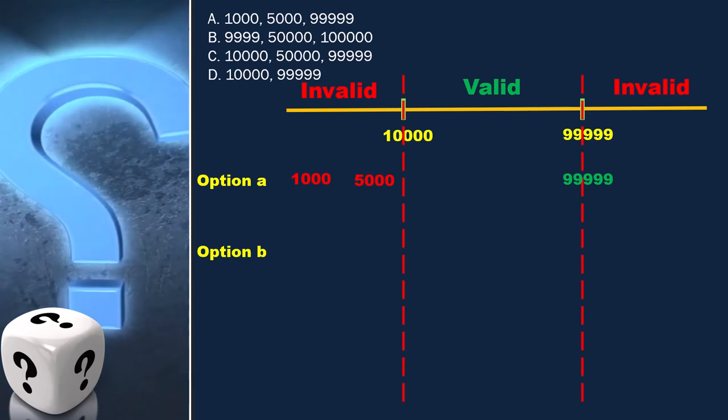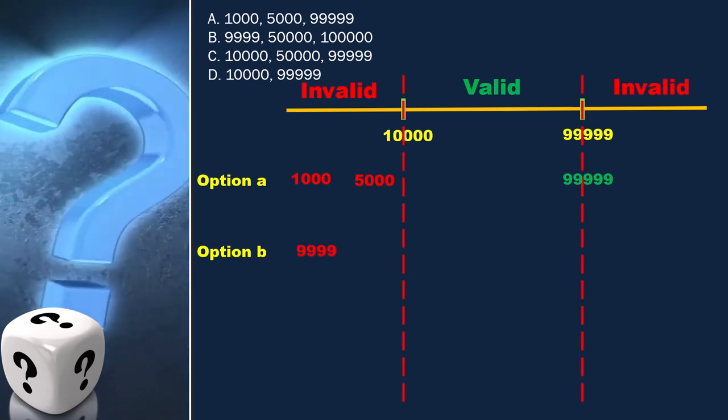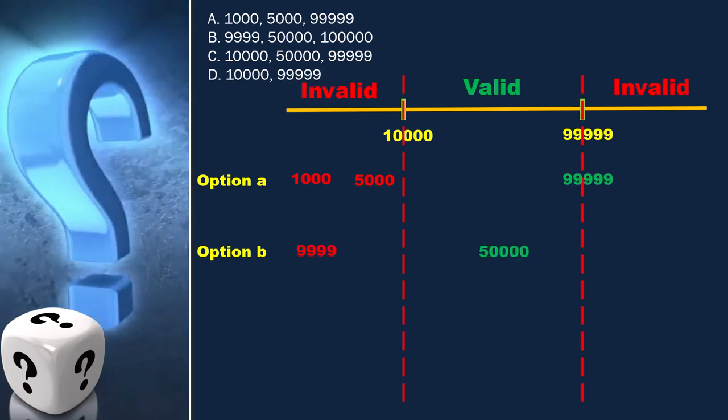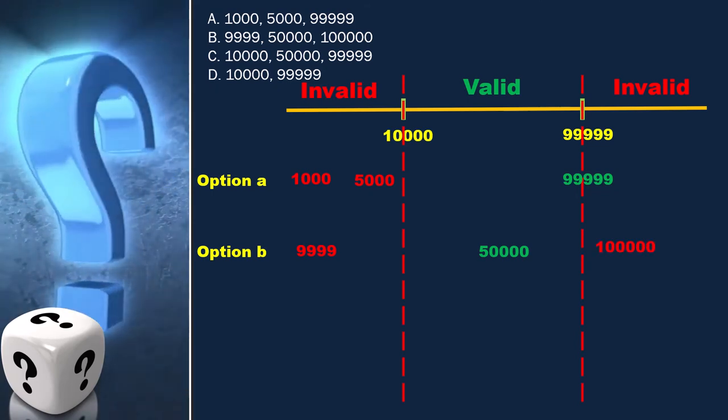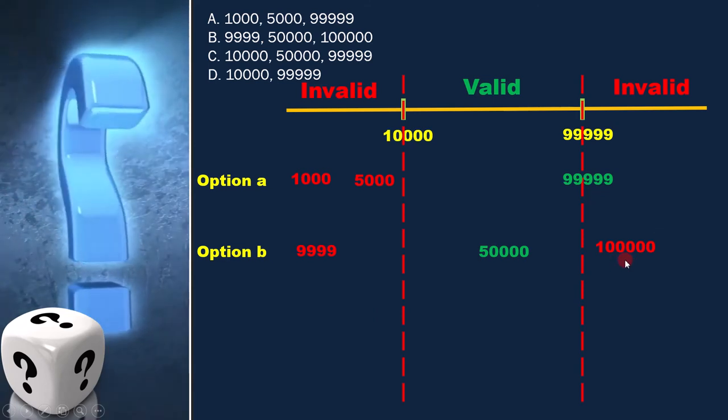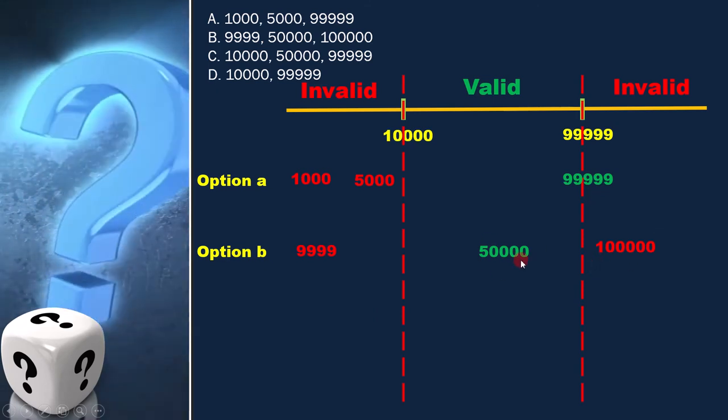Option B is 9,999, 50,000, and 100,000. Here again two values are in invalid range and one value is in valid range.